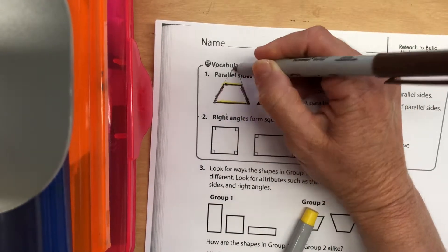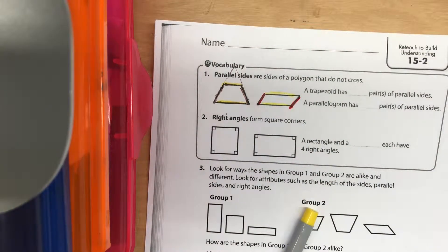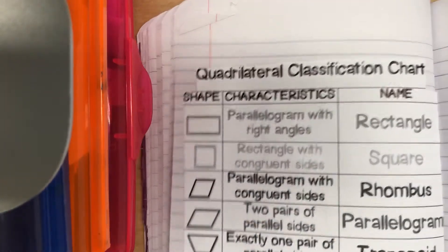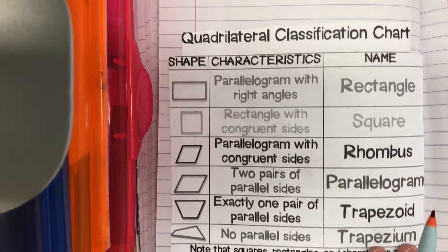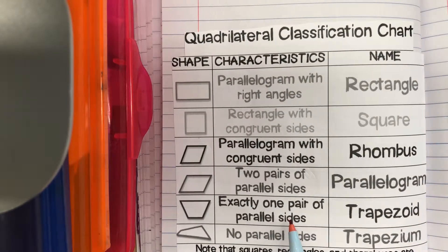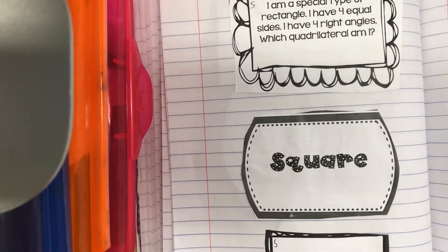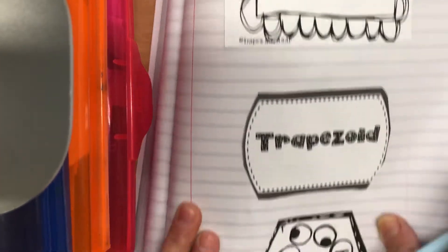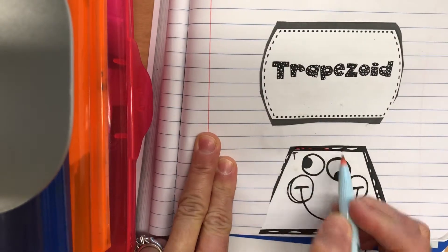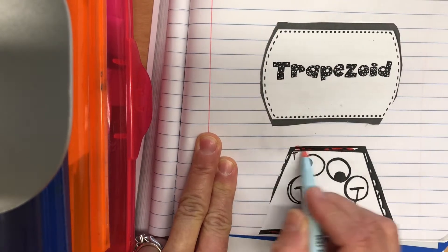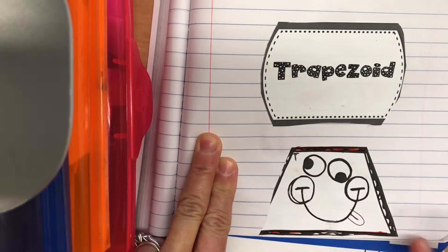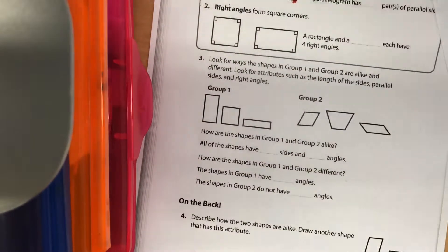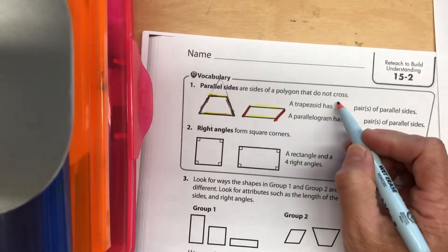So a trapezoid has how many pairs of parallel lines? Well, if you look at your comp book here, a trapezoid has exactly one pair of parallel lines. If you look at our trapezoid, it says 'I have only one pair of parallel lines.' This top and this bottom are parallel to each other — it's going to keep going that way — but these sides are not parallel.